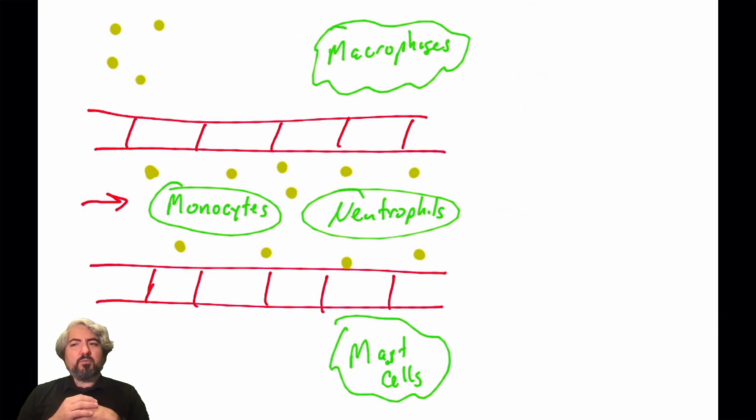I've got these little dots around. What are those? Those are complement proteins. Remember, you're making them all the time. You got C5, you got C3, you got factor B, factor D. They're in your plasma, blood plasma. They're in your interstitial fluid. So you got complement proteins in those compartments as well.